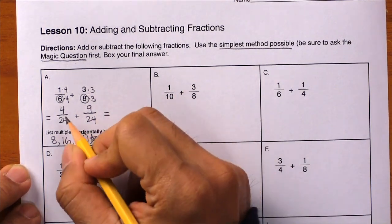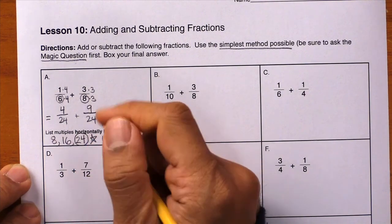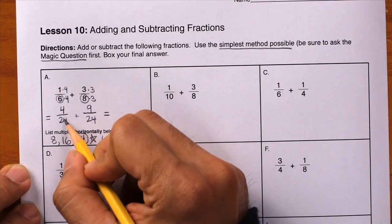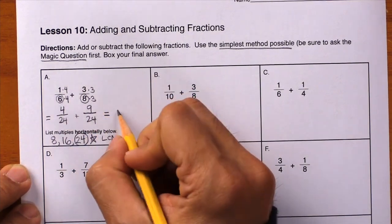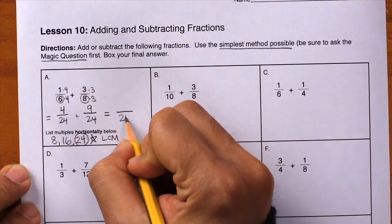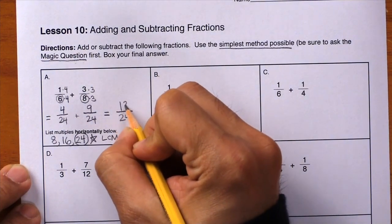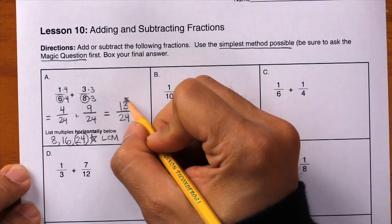Now it's just a simple addition problem. Just like apples plus apples gives you apples. Twenty-fourths plus twenty-fourths give you twenty-fourths. How many twenty-fourths? Thirteen twenty-fourths. And box your answer.